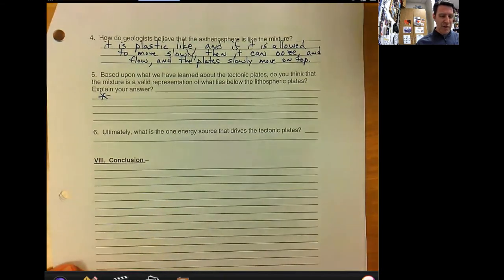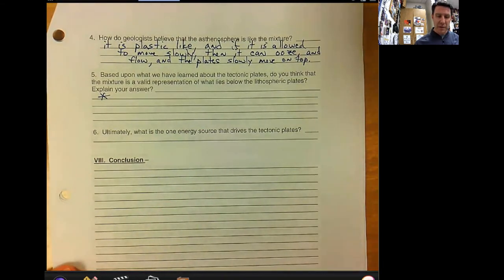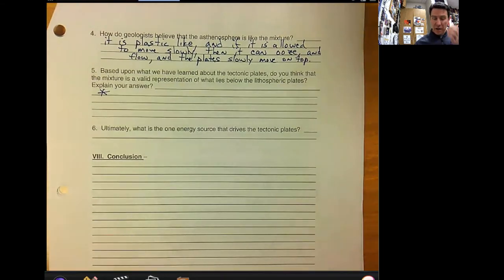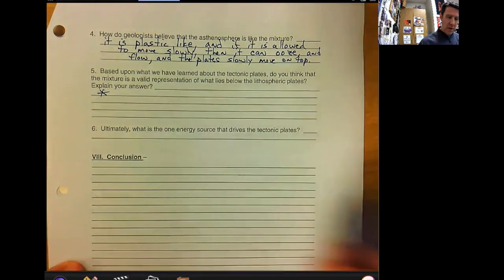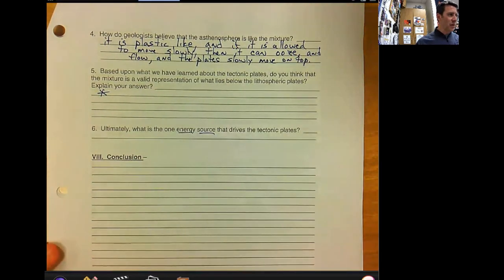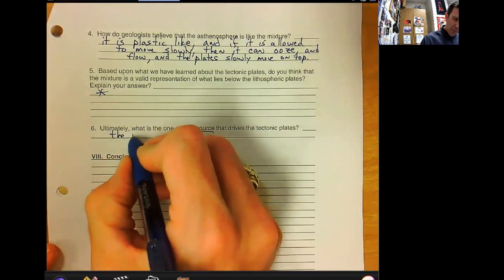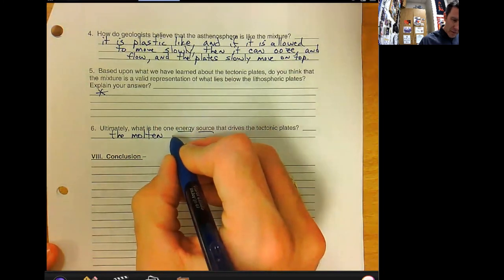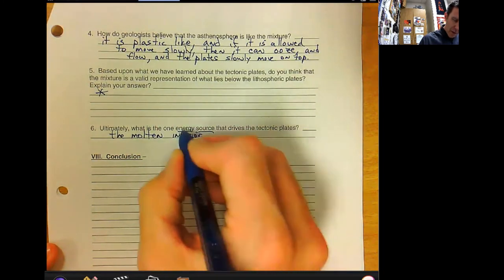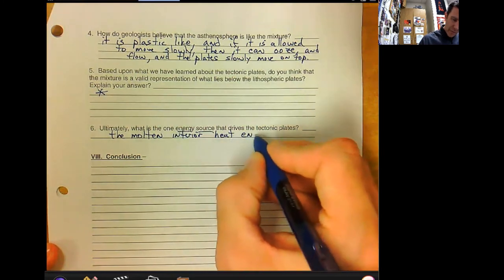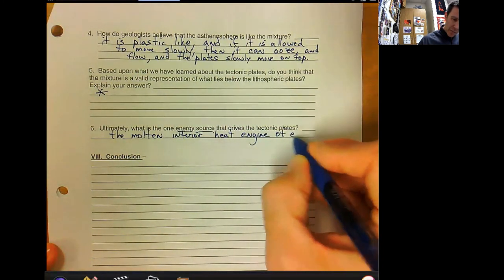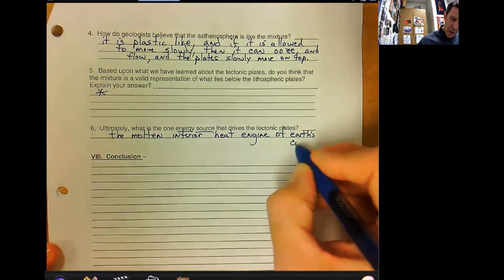Lastly, ultimately, what is the one energy source that drives the tectonic plates? Talked about at the beginning, the only logical answers are that the tectonic plates either move themselves or something else is moving them. We pretty much know that they don't move themselves, and the force that does move them is not external. So there's an internal force. What is that energy source that drives the tectonic plates? The molten interior heat engine of Earth's core.